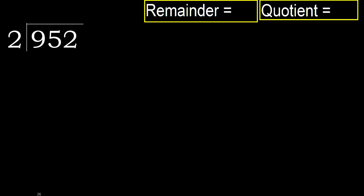952 divided by 2. 9 is not less, therefore start with 9. 2 multiplied by which number is nearest to 9, but not greater?